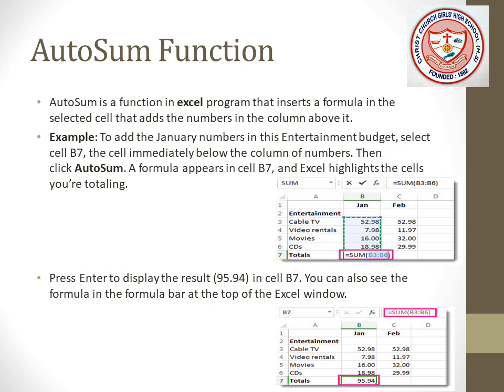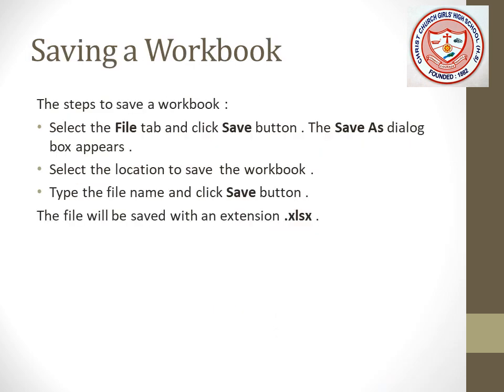This is the AutoSum feature. Now, saving a workbook: select the File tab and click Save. The Save As dialog box appears. Select the location to save the workbook, type the file name, and click Save. The file will be saved with the extension .xlsx.